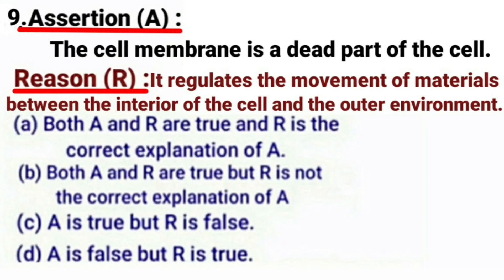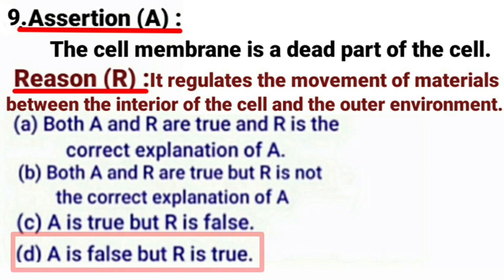Next question. Assertion: The cell membrane is a dead part of the cell. Reason: Cell membrane regulates the movement of materials between the interior of the cell and the outer environment. Cell membrane is actually a living part of the cell, so the statement of assertion is false. The statement of reason is true — the plasma membrane allows or permits the entry and exit of some materials in and out of the cell, and prevents movement of some other materials, so it is also called a selectively permeable membrane. The correct answer is option D: assertion is false, but reason is true.